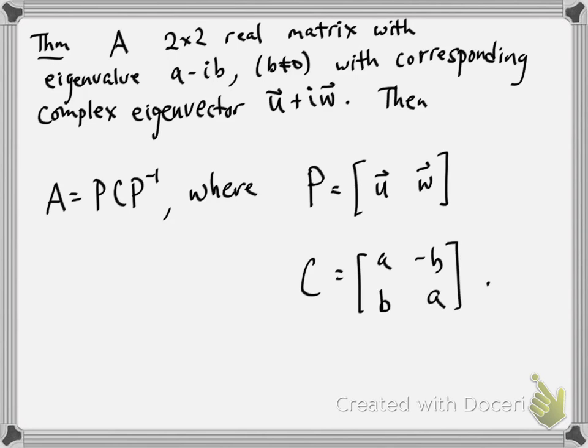And C is going to have this very nice shape. It'll be [a -b; b a]. So I say this has a very special shape. What's so good about it? What's so nice about this matrix C?